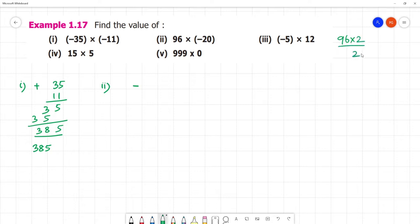96 into 2: 6 times 2 is 12, remainder 1. 9 times 2 is 18, plus 1 is 19. Then 1, 9, 2, 0. This is minus 1920.